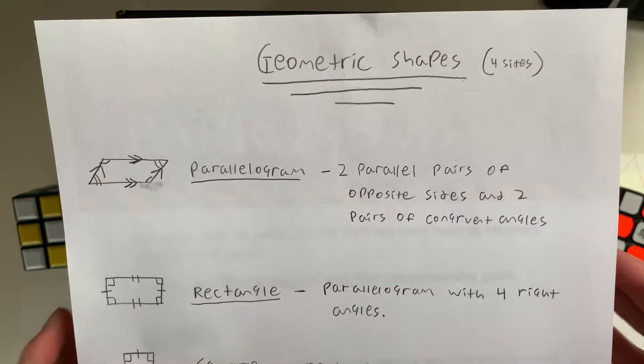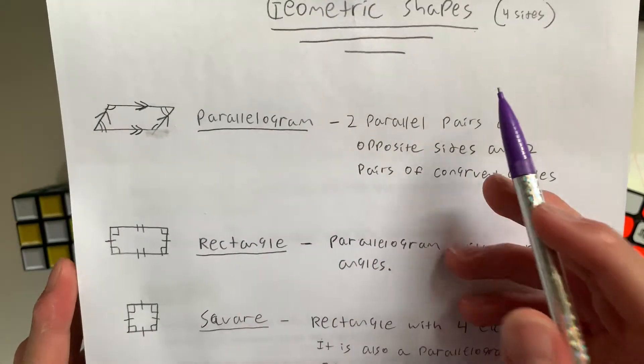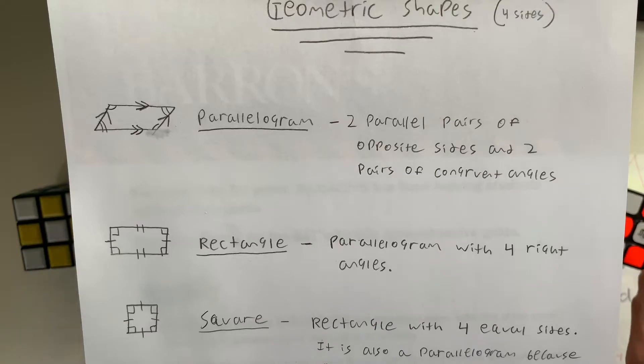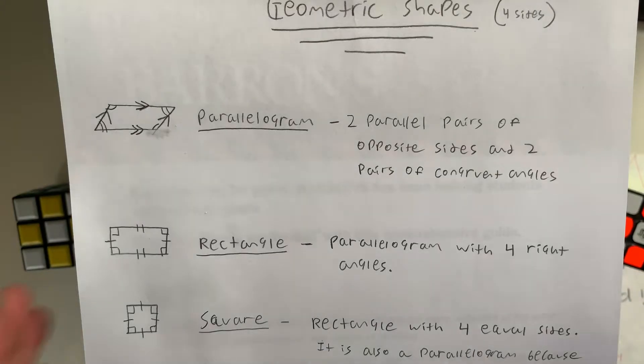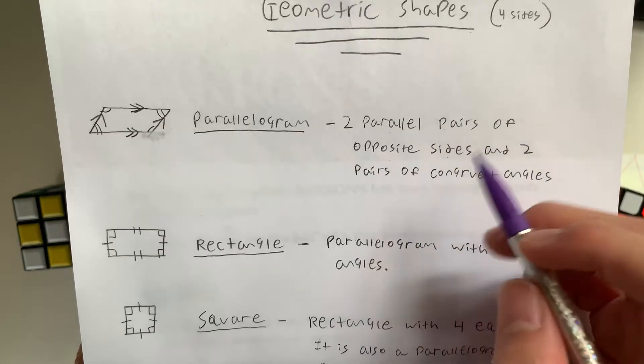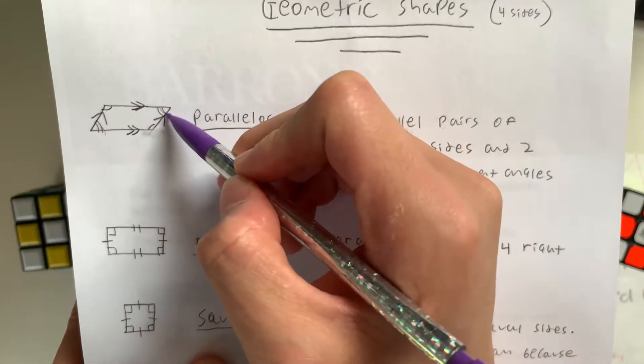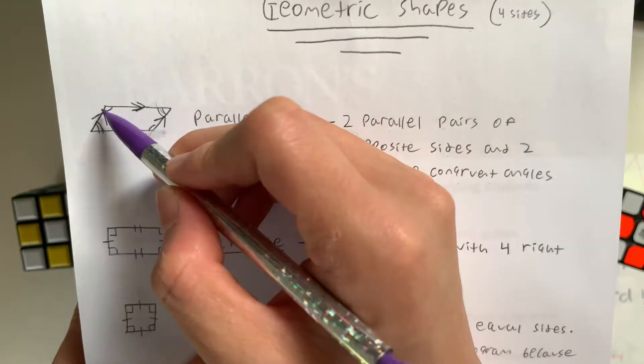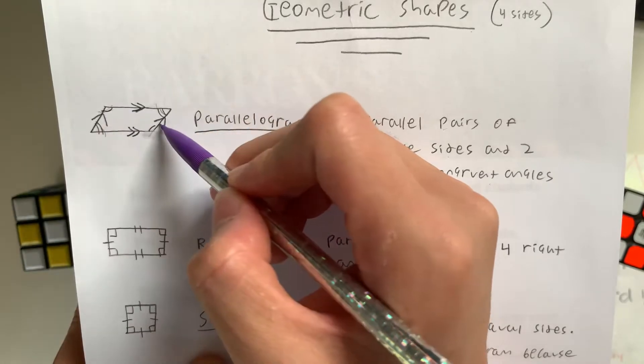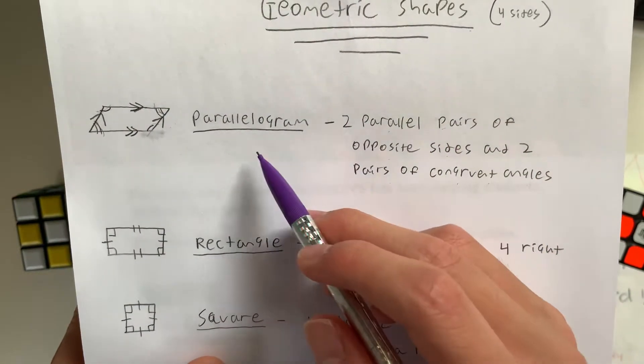The first quadrilateral is the simplest: the parallelogram. What are the characteristics of a parallelogram? It has two parallel pairs of opposite sides and two pairs of congruent angles. This means that opposite angles are the same. This angle is the same as this angle, and this angle here is the same as this.